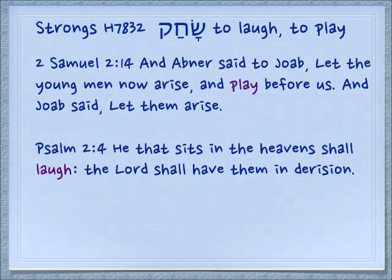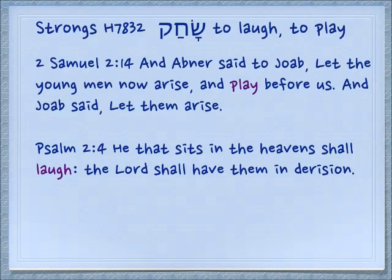In 2 Samuel 2:14, Abner said to Joab, 'Let the young men now arise and play before us,' and Joab said, 'Let them arise.' Now they are not playing Monopoly here — this is going to be a wrestling match, twelve from one group and twelve from the other, and in the end everybody will be dead. Also translated 'to laugh' is Psalm 2:4: 'He that sits in the heavens shall laugh; the Lord shall have them in derision.'